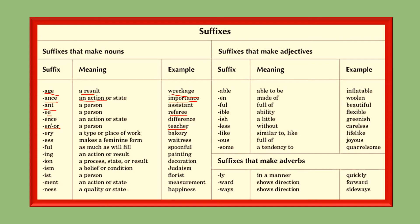'-ess' is used to make the feminine form — when you have a male noun, to make it female we use '-ess', like 'waitress'. '-ful' gives 'spoonful' and 'plentiful'. '-ist' denotes a person, as in 'florist' and 'chemist'.